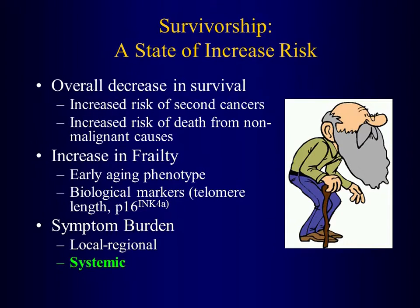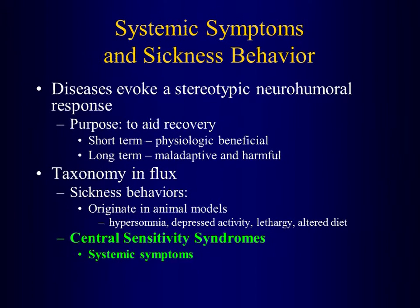This is a hot area of research. When I think of survivorship, I think of it as a state of increased risk — increased risk of dying not necessarily from your cancer, but from the effects of your cancer and its treatment. You are at increased risk for early frailty and escalated loss of function, and also at risk for symptom burden — either local, local-regional, or systemic symptoms. What we're going to talk about today are the systemic symptoms that patients with cancer and survivors experience.